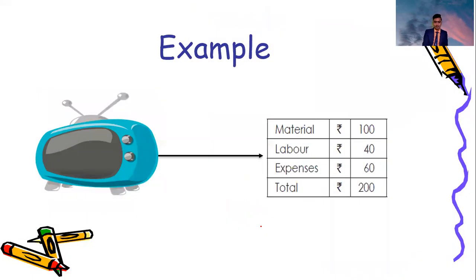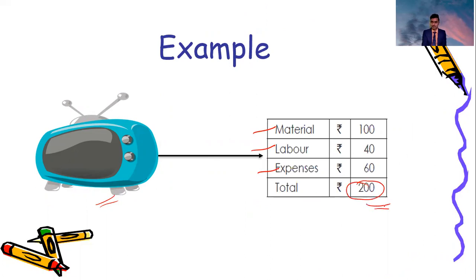Another example: consider a television. What is the cost of the television? It includes the cost of metal, and the cost of labor.